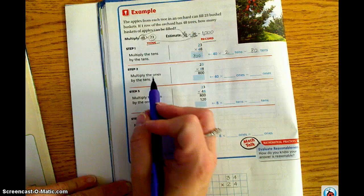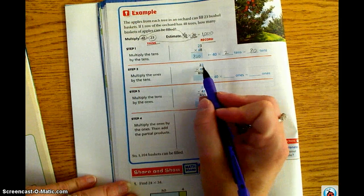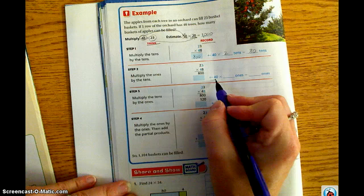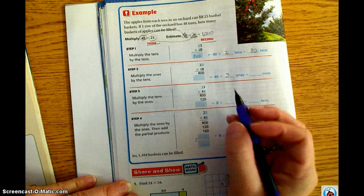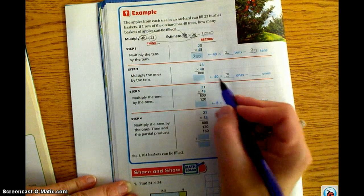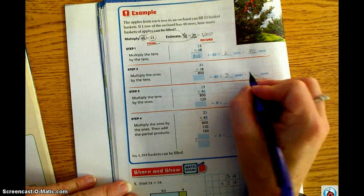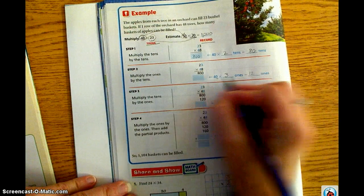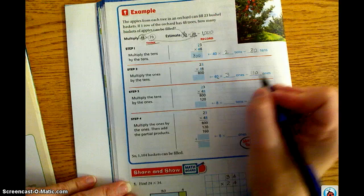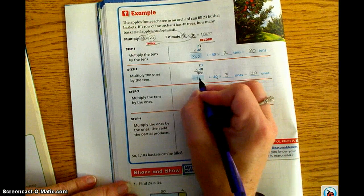Step 2. Multiply the ones by the tens. Ones by the tens. So, 40 times 3 ones. So, mental math, 4 times 3 is 12. Your additional 0. So, 120 ones. So this is going to be 120.